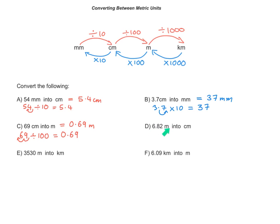The next one: 6.82 metres into centimetres. I'm converting larger units into smaller units, so I need to multiply. I will multiply by 100, because I'm converting metres into centimetres. So 6.82 multiplied by 100 equals 682 — I've moved the decimal place two places to the right. When multiplying by 100, move the decimal two places to the right. So 6.82 metres is equivalent to 682 centimetres.